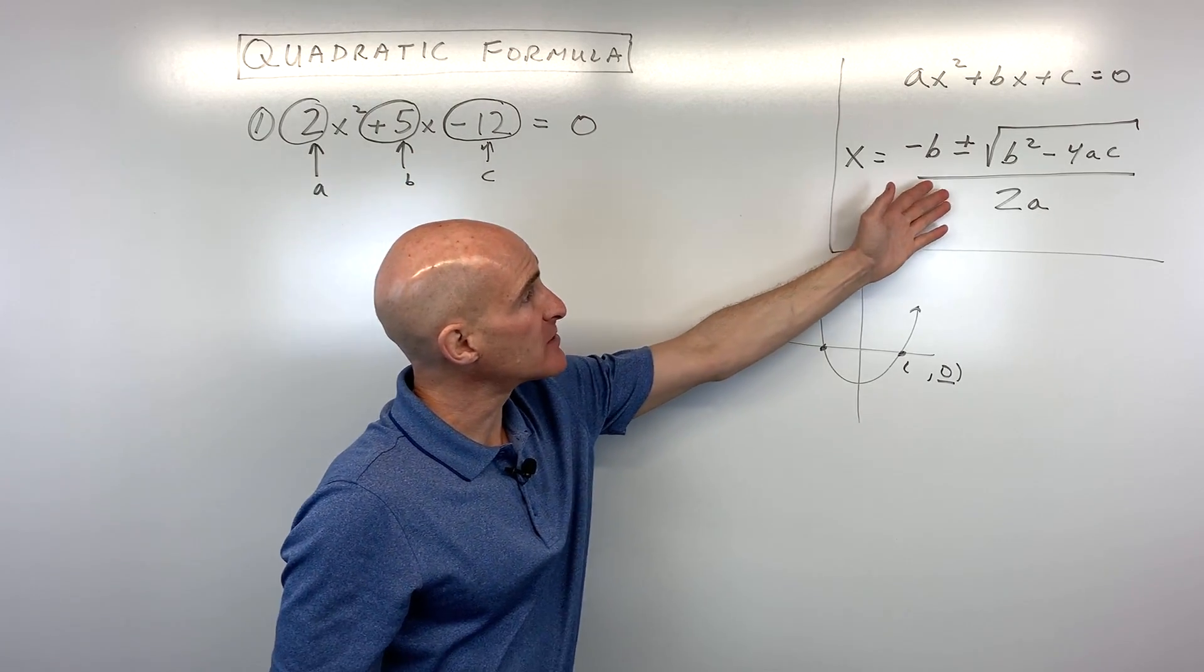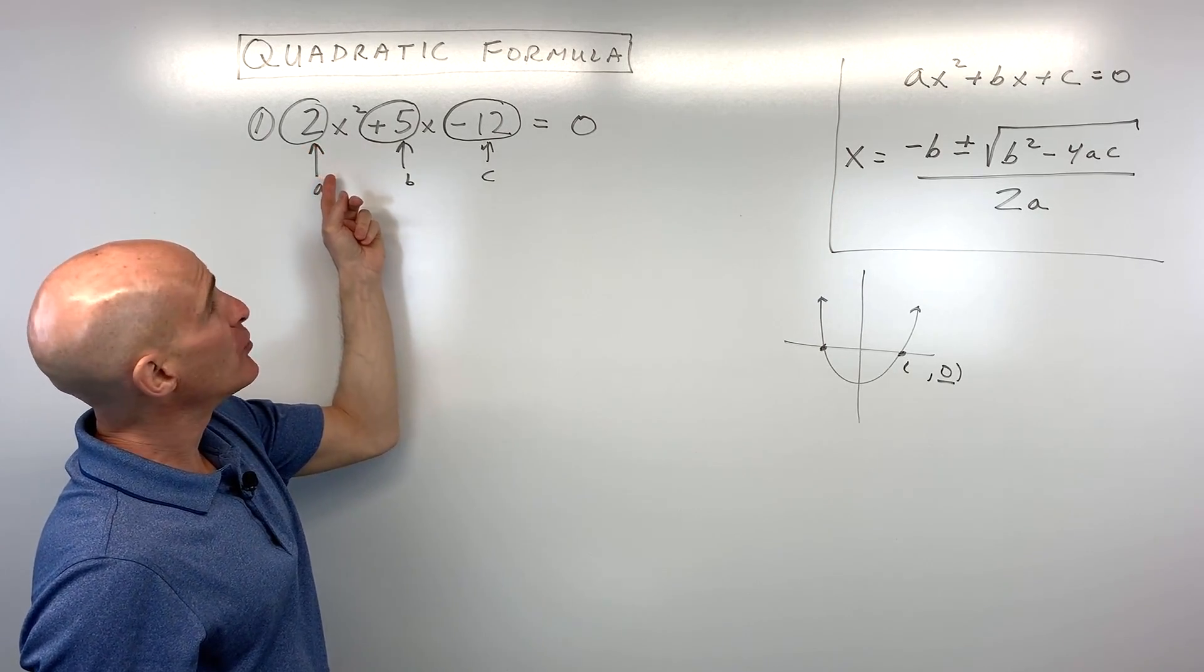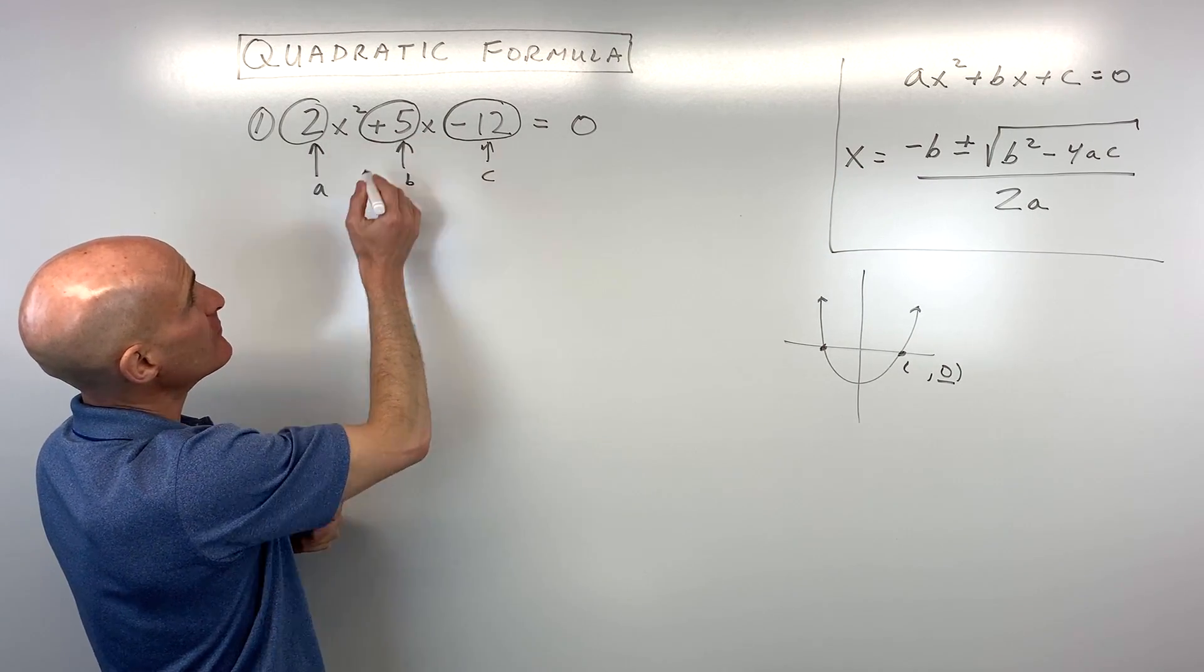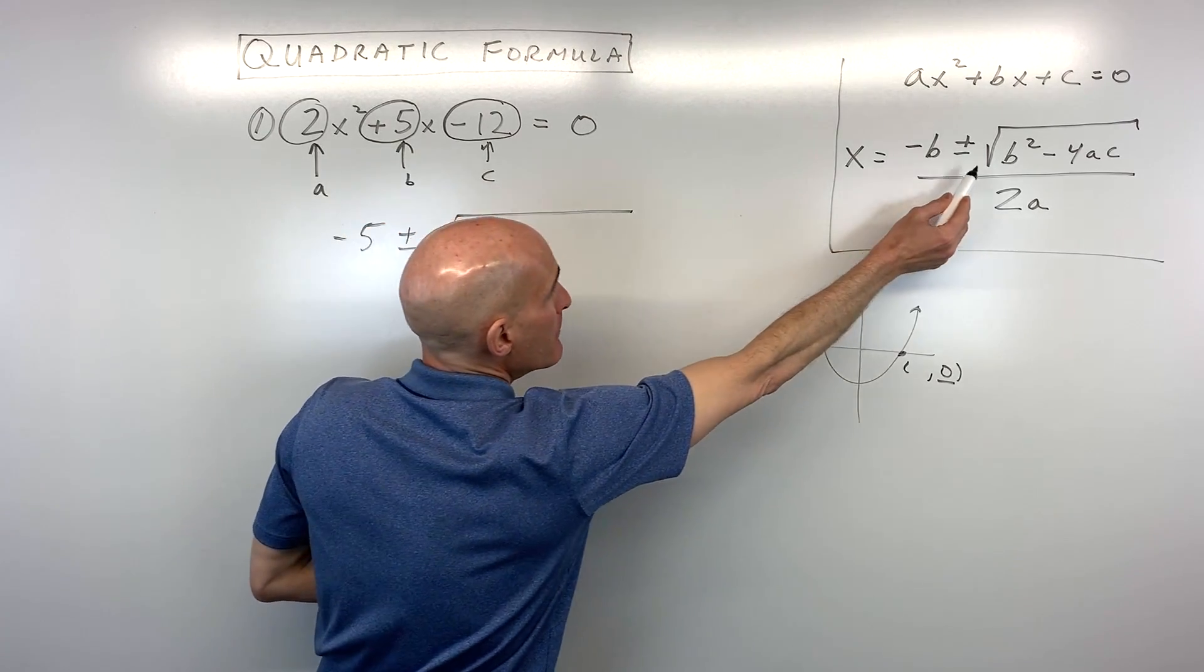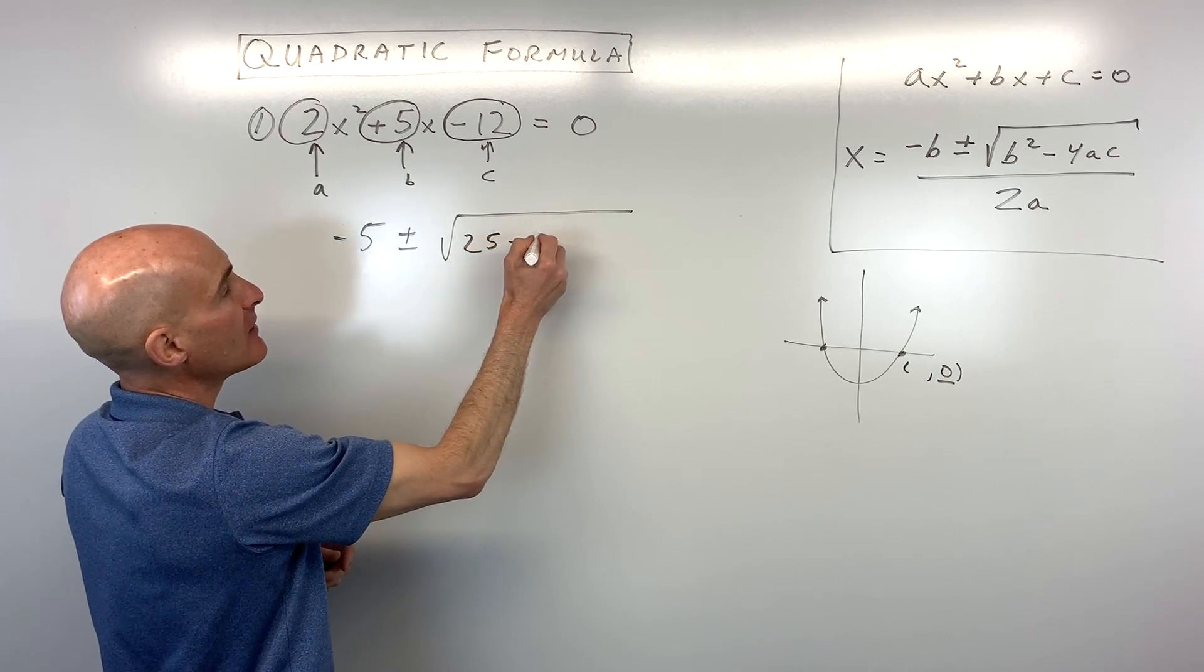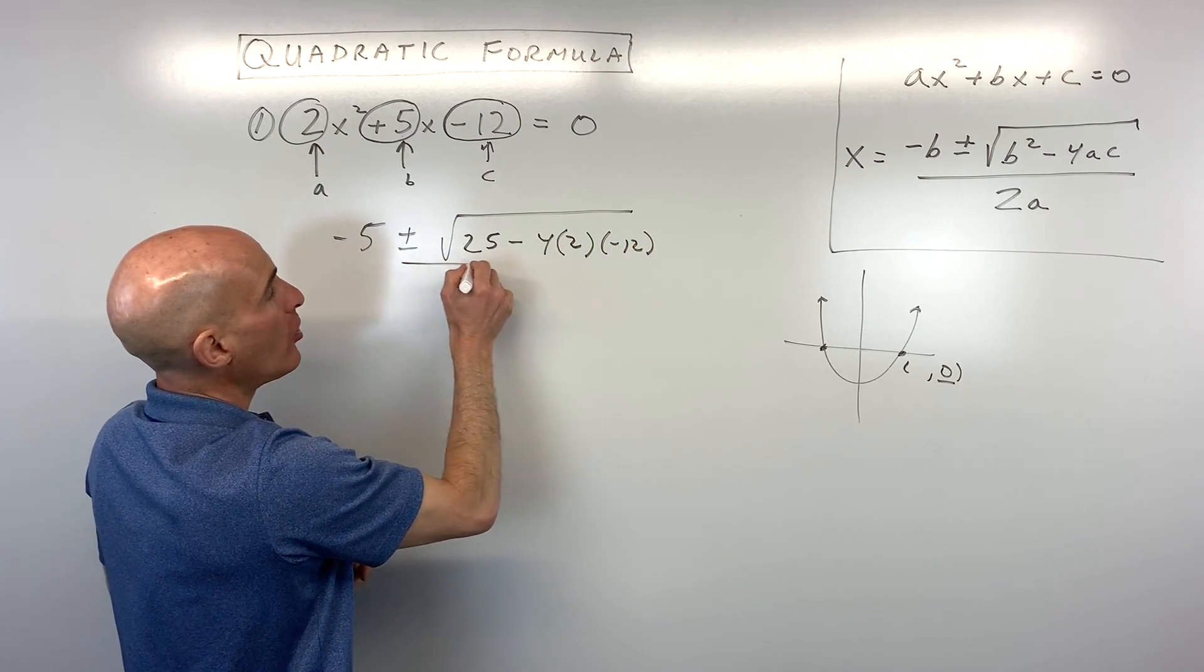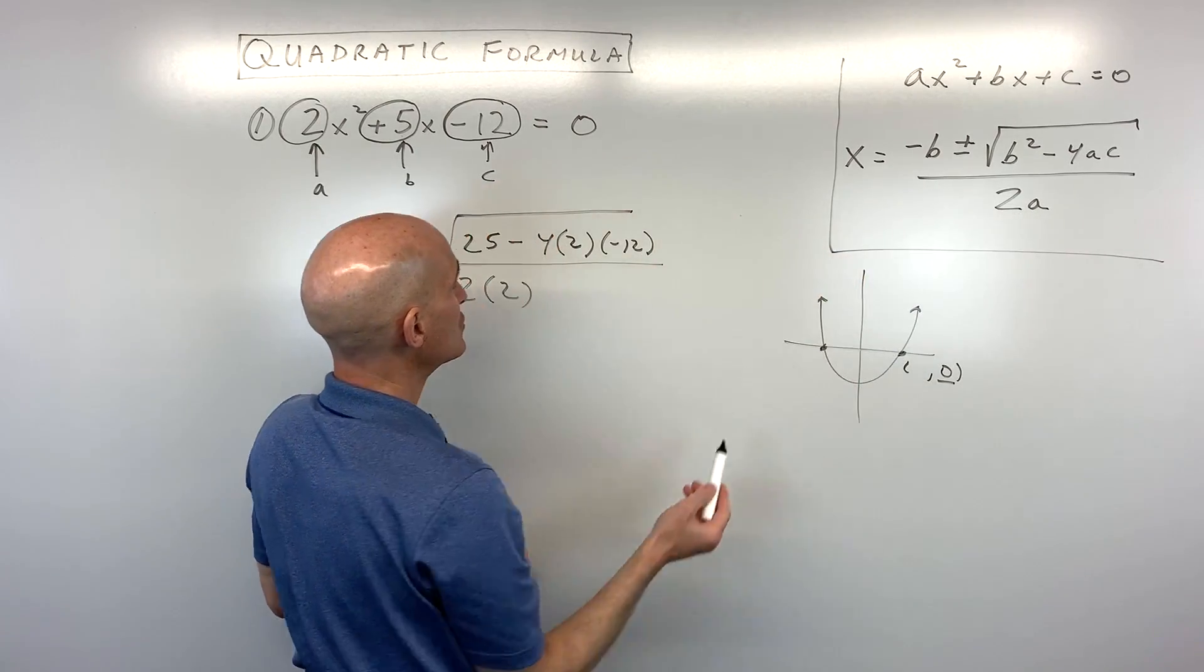Then what we can do is we can substitute it into this quadratic formula, and that'll give us our x values. So here we can put in negative b. Negative b means like the opposite of b. It doesn't necessarily have to be negative. It's just going to be the opposite of b, so the opposite of 5, plus or minus the square root of b squared. So that's going to be 5 squared, which is 25, minus 4, times a, which is 2, times c, which is negative 12, all divided by this whole thing, 2 times a. So 2 times 2 in this case.